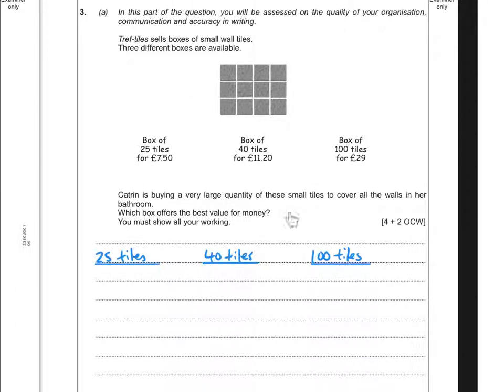Katrin is buying a very large quantity of these small tiles. Which box offers the best value for money? There's two marks available for OCW, so for the way you've set it out, showing all your workings and coming to a conclusion at the end.